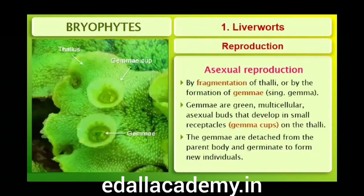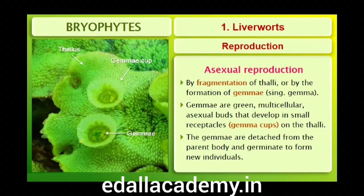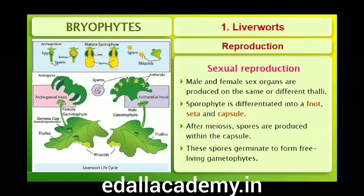Asexual reproduction in liverworts takes place by fragmentation of thalli or by the formation of specialized structures called gemmae (singular: gemma). Gemmae are green, multicellular, asexual buds which develop in small receptacles called gemma cups located on the thalli. The gemmae become detached from the parent body and germinate to form new individuals. During sexual reproduction, male and female sex organs are produced either on the same or on different thalli. The sporophyte is differentiated into a foot, seta and capsule; after meiosis, spores are produced within the capsule.